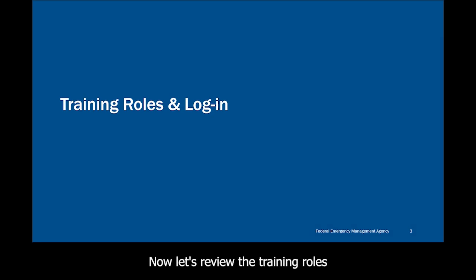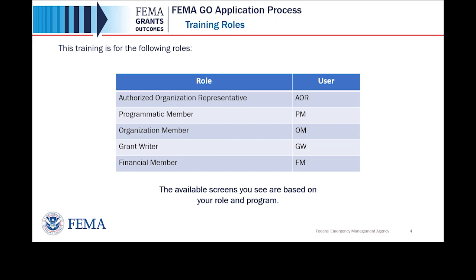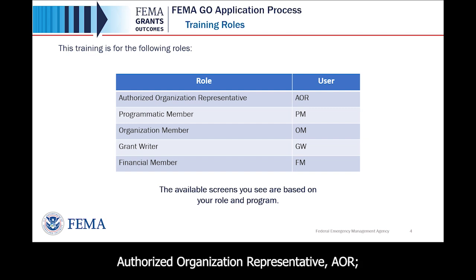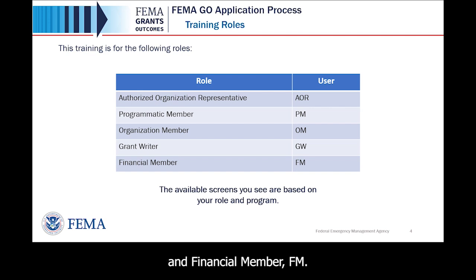Now let's review the training roles for this training and how to log in as an external user. This training is for the following roles: Authorized Organization Representative (AOR), Programmatic Member (PM), Organization Member (OM), Grant Writer (GW), and Financial Member (FM).